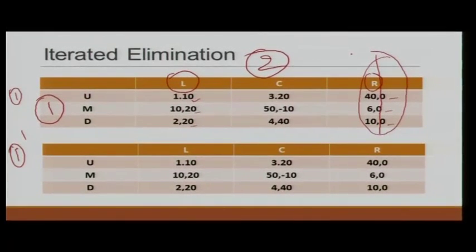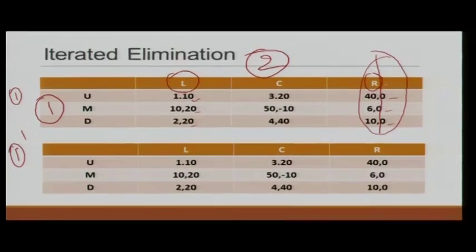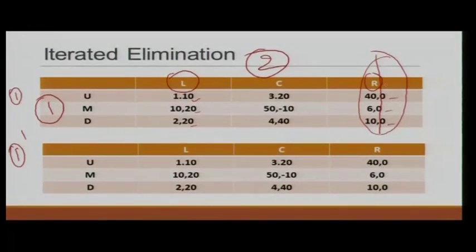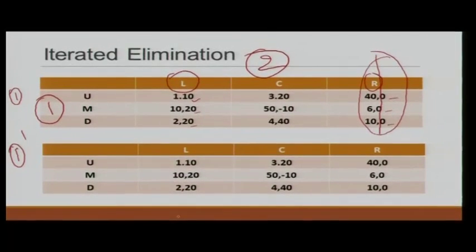Now player 1 is looking at a smaller game in which player 2 has only two strategies: L and C (left and center). Player 1 does not need to consider strategy R for player 2. Earlier, player 1 did not have any dominant or dominated strategy, but in the reduced game, player 1 now has a dominant strategy and also dominated strategies.